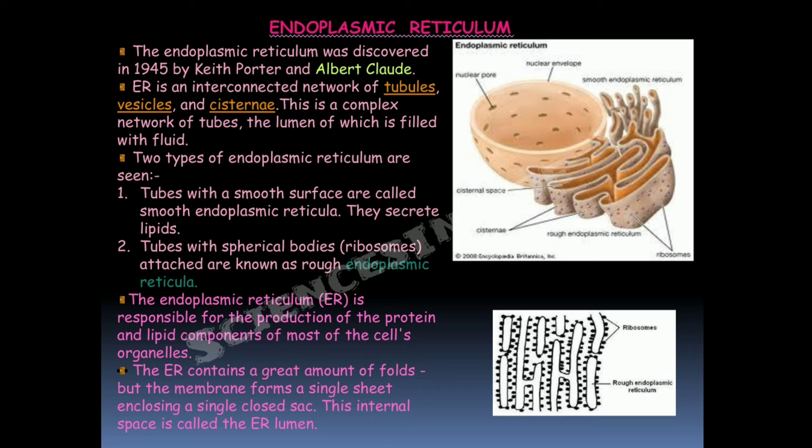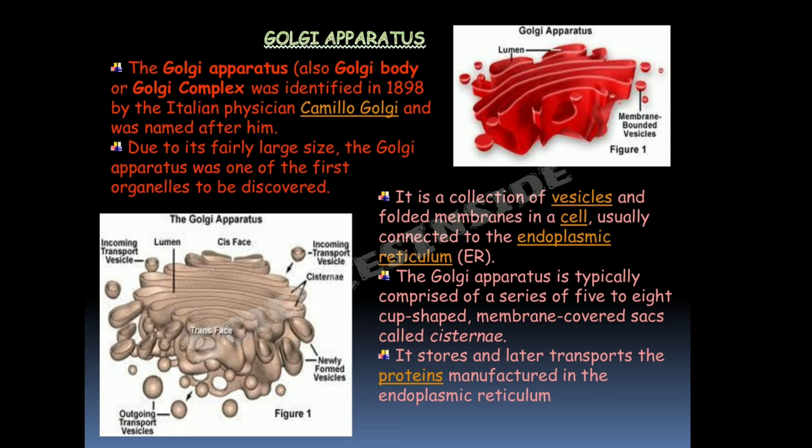The Golgi apparatus — also called Golgi body or Golgi complex — was identified in 1898 by Italian physician Camillo Golgi, and is named after him. Due to its fairly large size, it was one of the first organelles to be discovered. It is a collection of vesicles and folded membranes usually connected to the ER, comprising five to eight cup-shaped membrane-covered sacs called cisternae. It stores and later transports proteins manufactured in the ER.